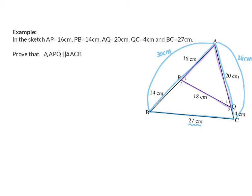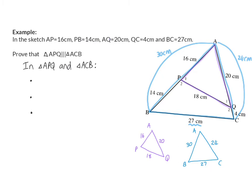We're going to start by mentioning the two triangles we are going to prove similar. We need to mention three pairs of sides with the same ratio. It's easier to draw those two triangles separately to see which sides are corresponding. So it will be the 20 and 30 centimeters, the 16 and 24, and the 18 and 27. Side AQ over side AB gives a ratio of 20 to 30, which simplifies to 2 over 3.